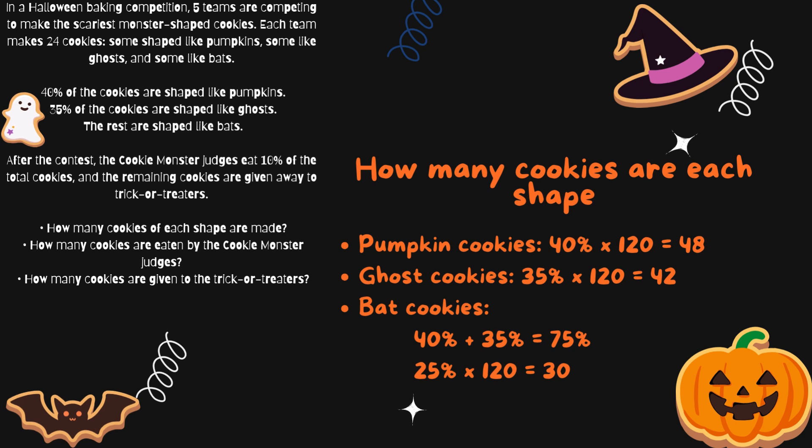Next we'll find out how many cookies are each shape. For pumpkin cookies, 40% of the cookies are pumpkins. To find that, we take 40% of 120, which means there are 48 pumpkin cookies.